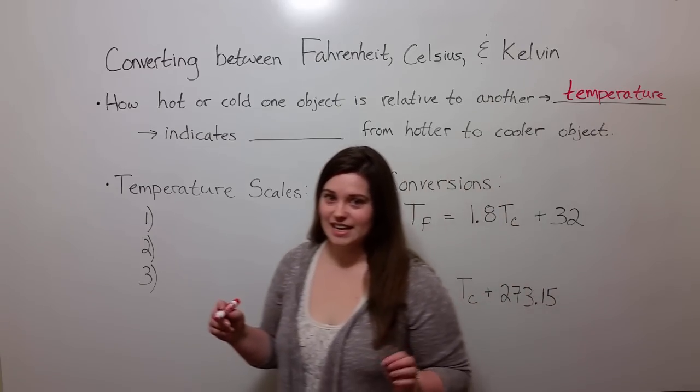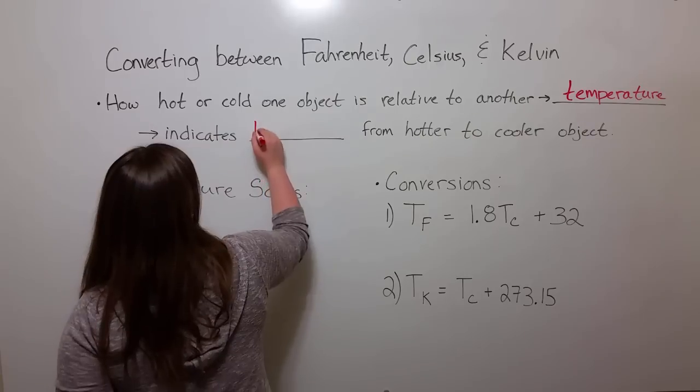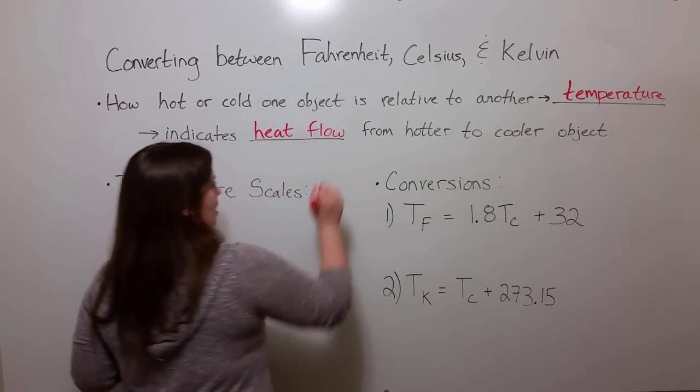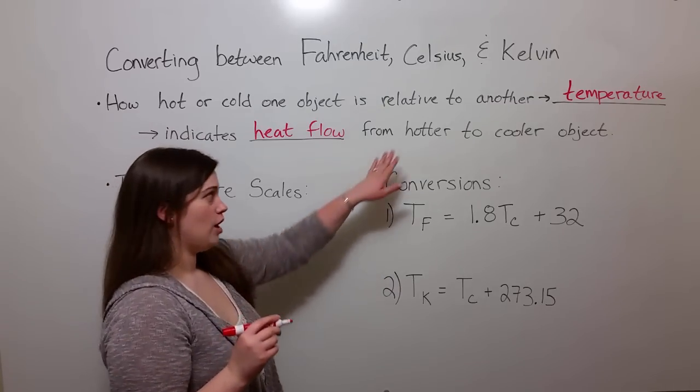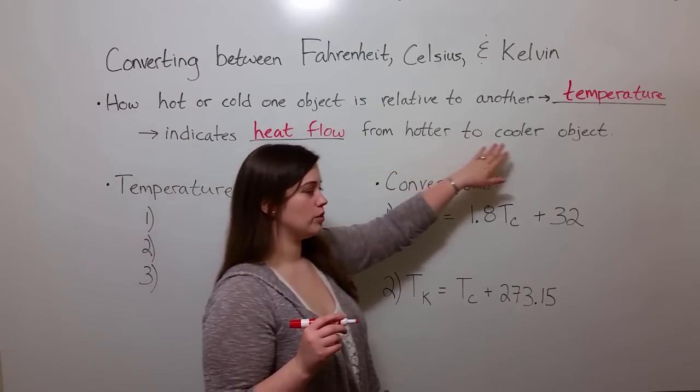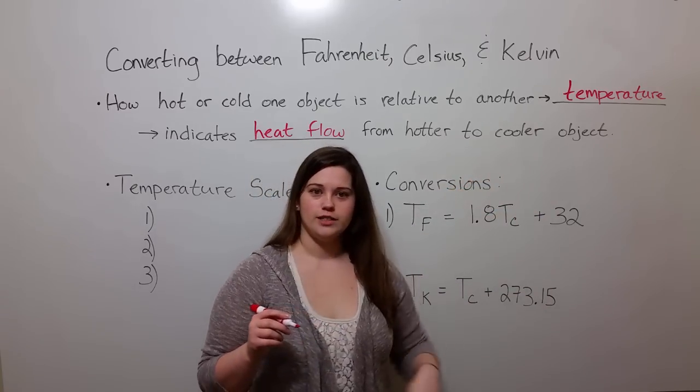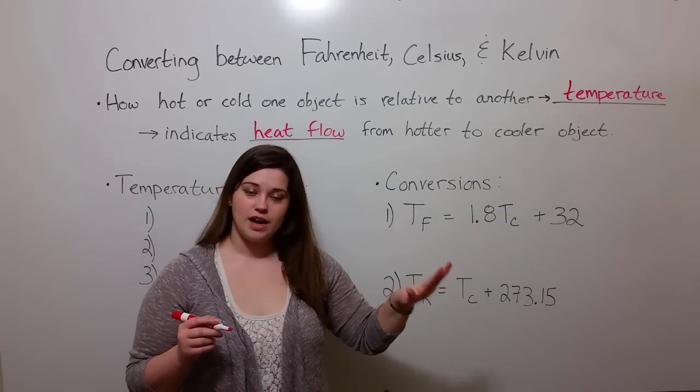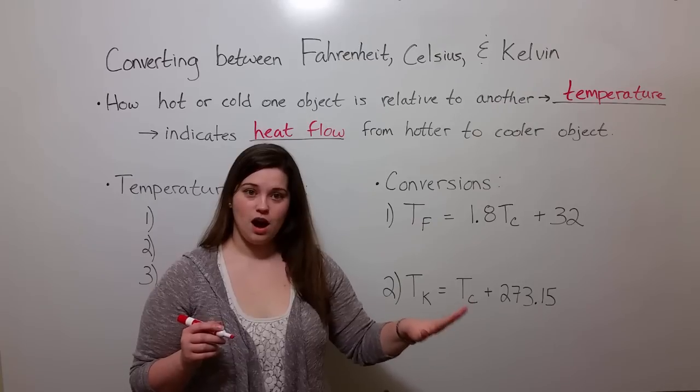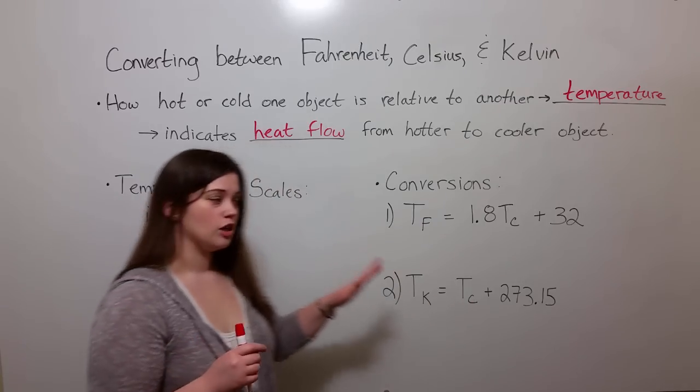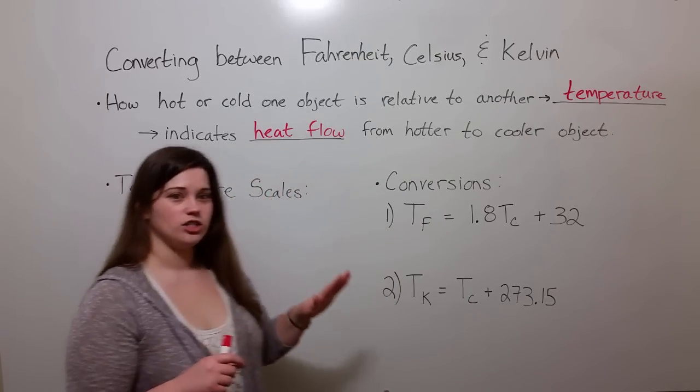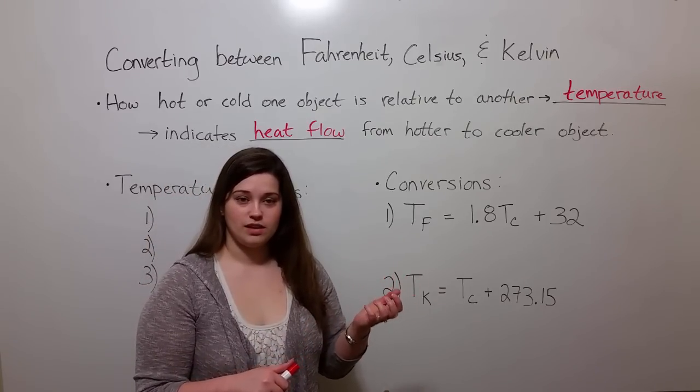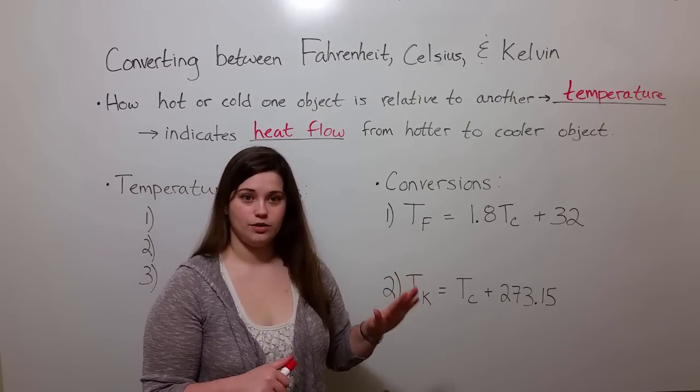You can think of it like this: Temperature indicates heat flow, and specifically heat flow from a hotter object to a cooler object. So for example, if you accidentally place your hand on an oven burner that's very hot, that transfers a lot of heat energy from the burner into your hand. And that's what you feel is the difference with how hot the burner is.